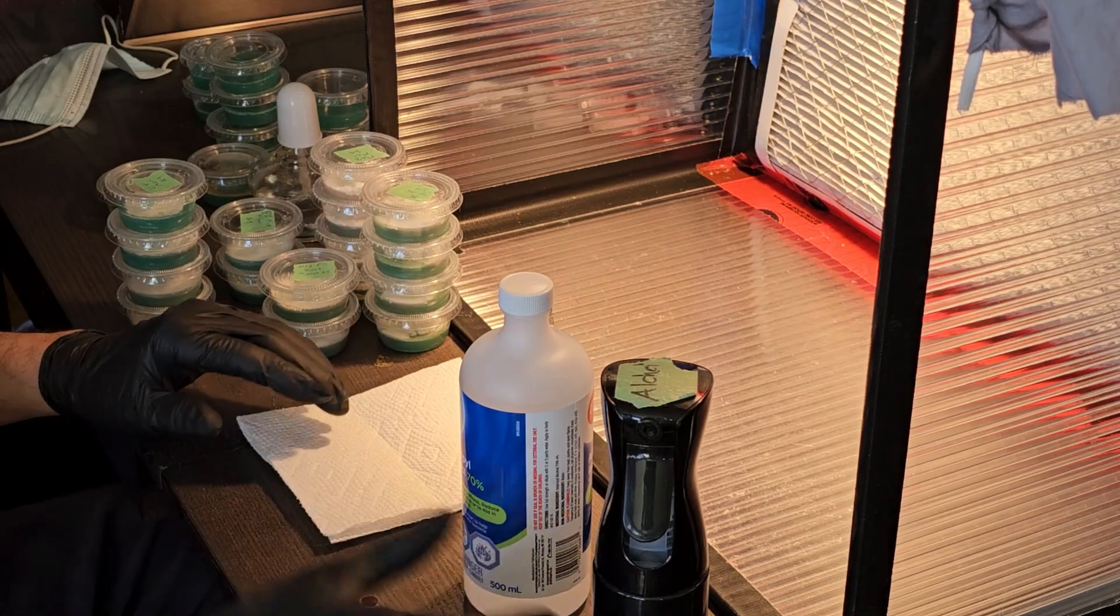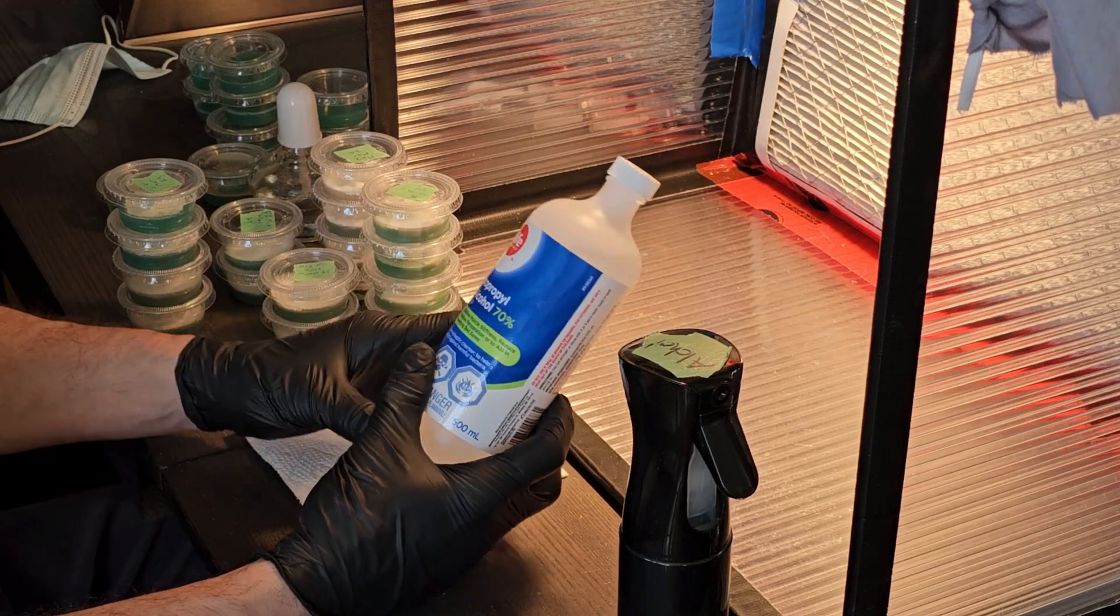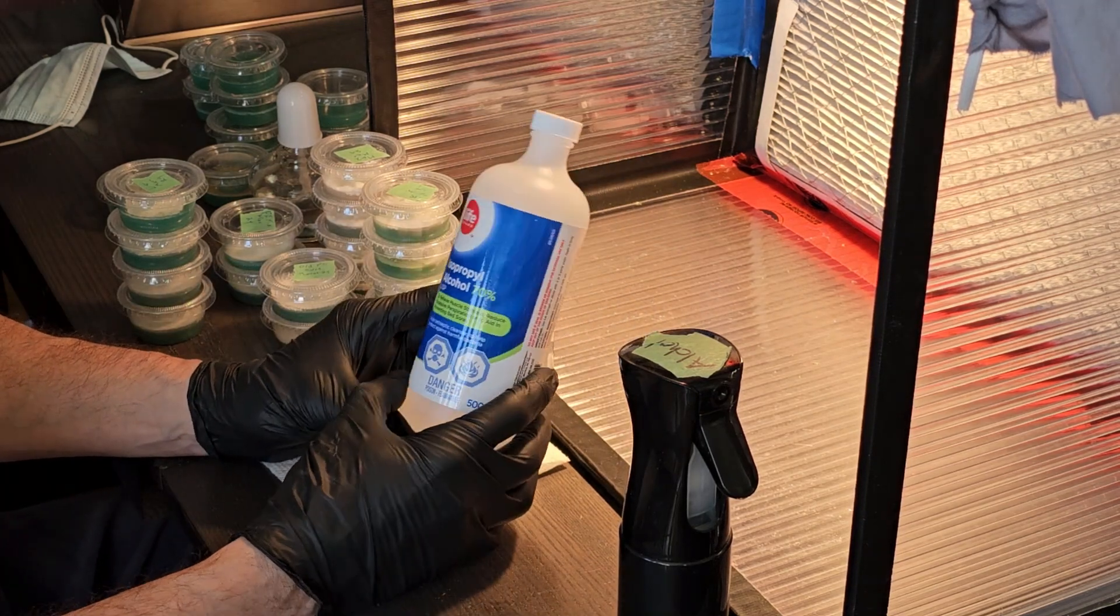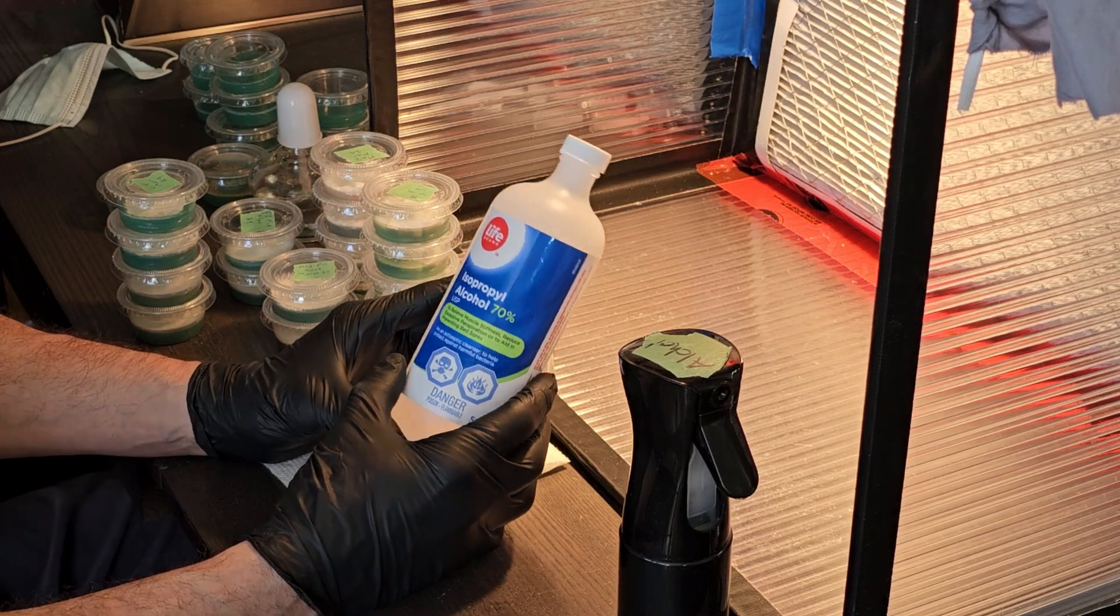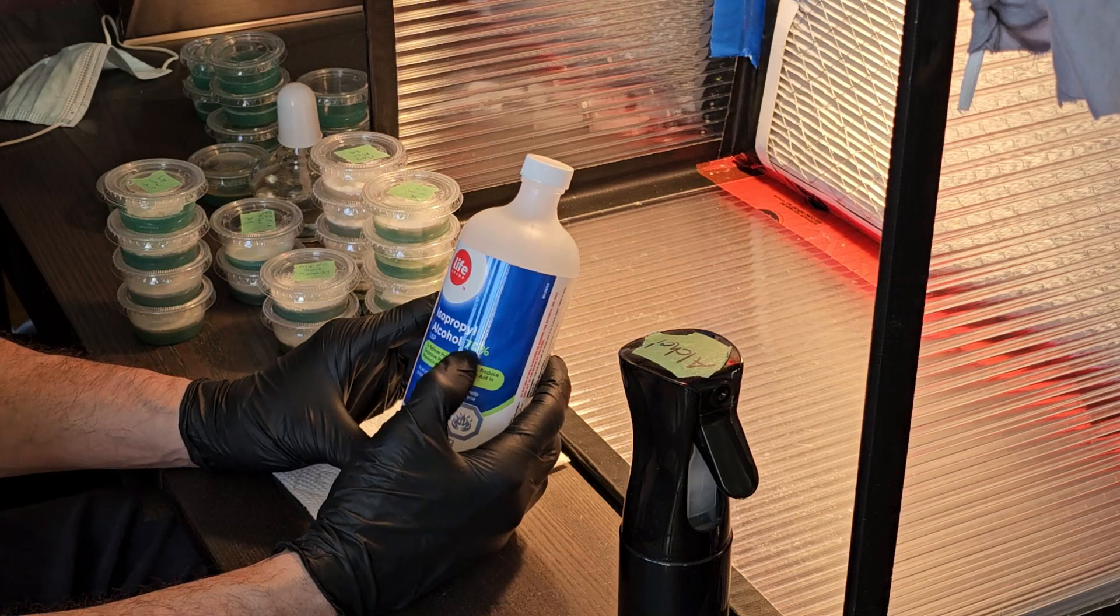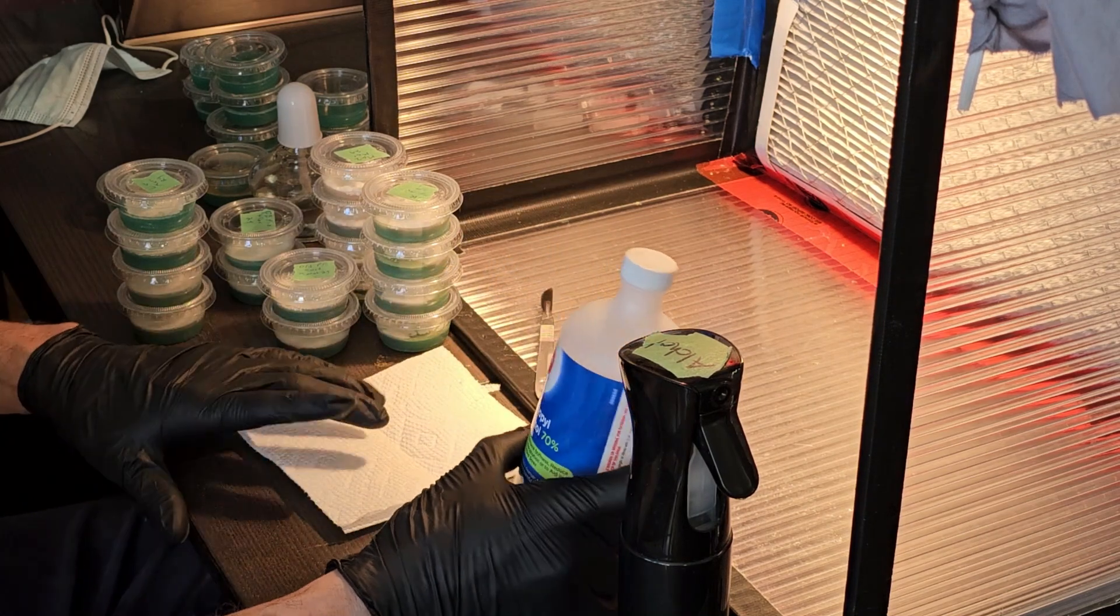Some of the materials we're going to need are alcohol for cleaning our area and our agar dishes. You want to use 70% isopropyl alcohol, not the 99%. The reason why is the 70% will evaporate slower, allowing you to do a better job cleaning.